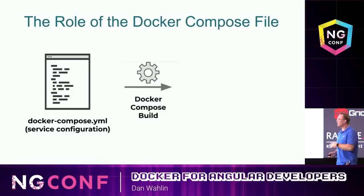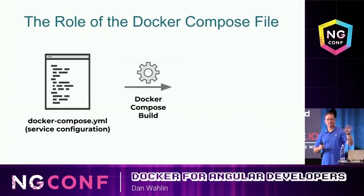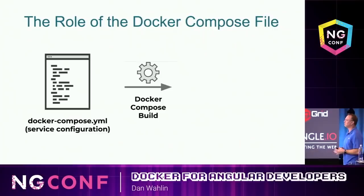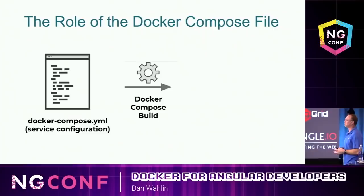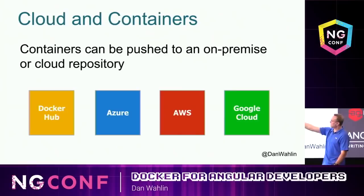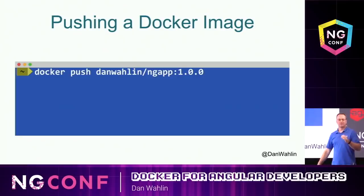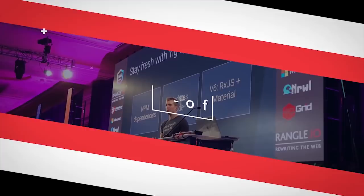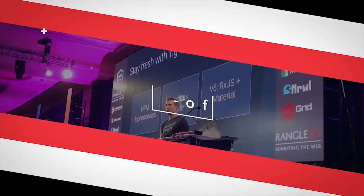A Docker Compose file takes images you have and acts like the conductor of an orchestra — it says 'image one, fire up; image two, fire up,' orchestrating multiple containers at once. To deploy between environments, whether on-site or up to Docker Hub, Azure, or AWS, you push the image or images up to your repository, and then you're ready to go.